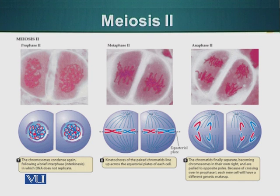Remember, we talked about this in meiosis I — that sister chromatids exchange parts with each other in a process called crossing over, when two homologous chromosomes are lying next to each other in the tetrad.